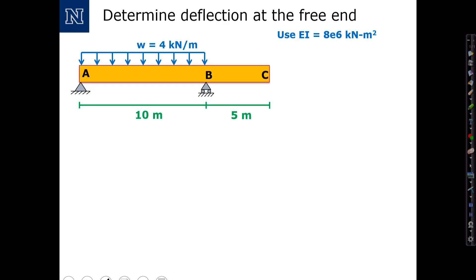In the next example, we're asked to determine the deflection at the free end of the simply supported beam with the overhang. Specifically, we want the deflection at the overhang. The loading on the beam is a distributed load between the supports A and B.